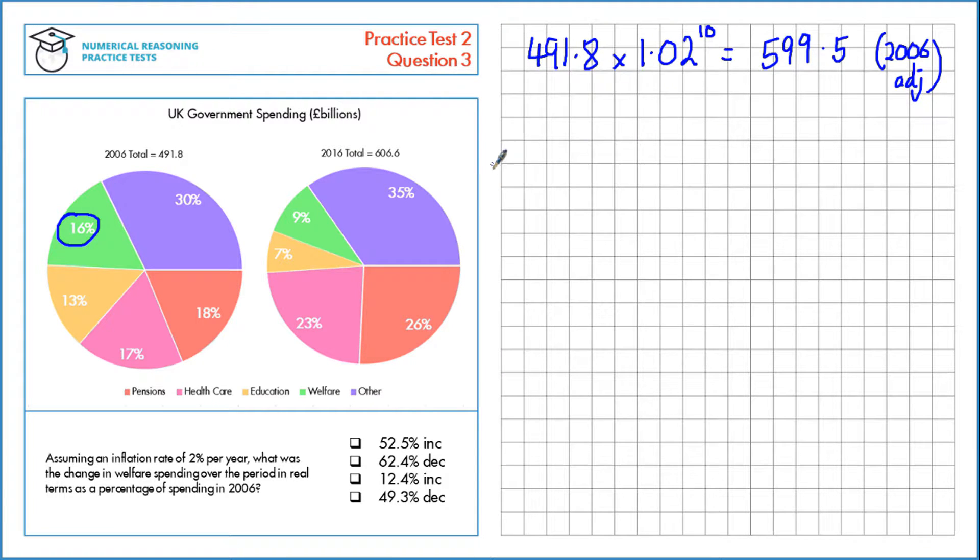Now let's calculate the total spending on welfare for 2006 and 2016 based on these new figures. 2006, we've got 16% of the spending was on welfare, that's 0.16 as a multiplier, multiplied by the new value of the money in 2016, which gives us 95.92 billion. For 2016, we have a 9% share, 0.09 of the 606.6 billion, which is 54.59.